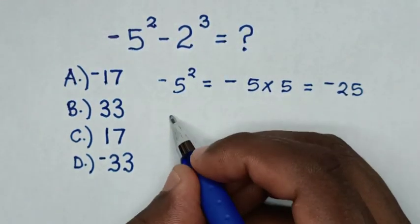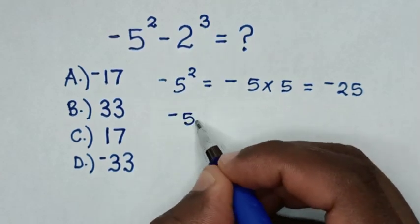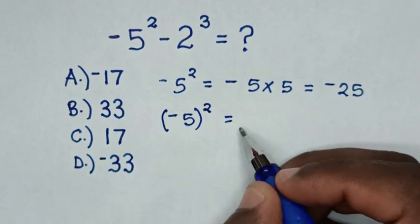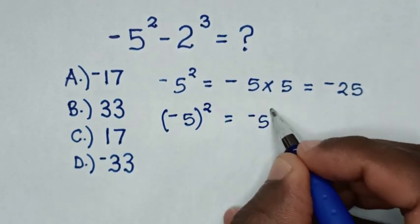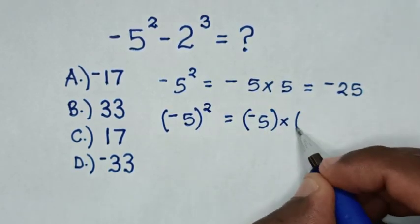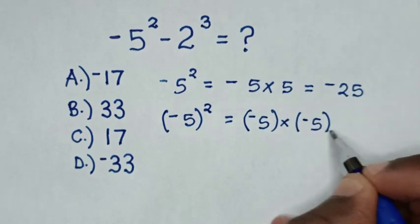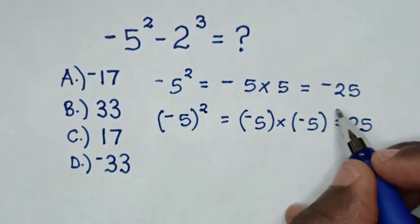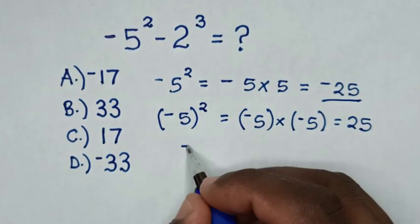But when it is negative 5 inside the bracket squared, it is equal to negative 5 bracket times negative 5 bracket, which is equal to 25. So we will use this negative 25.